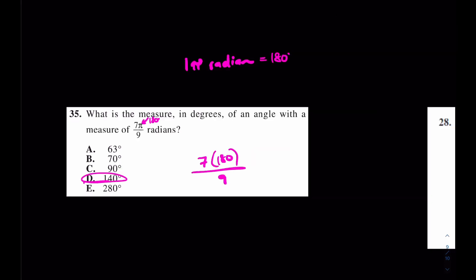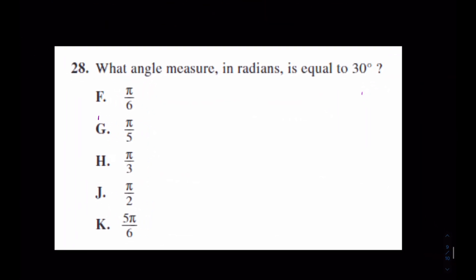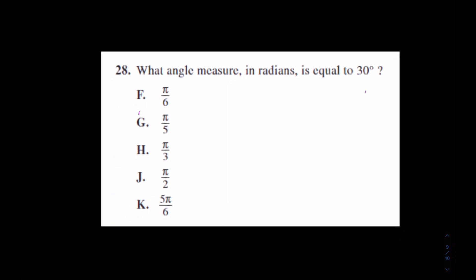I'm going to keep going. Let's come over here for this one. It says what angle measure in radians is equal to 30 degrees. Well this is kind of the exact opposite skill. Earlier I multiplied by 180 to get out of radians and into degrees. So if I want to get into radians, what do you think I should do? What's the opposite of multiplication? Division. So I have 30 degrees over 180 degrees.